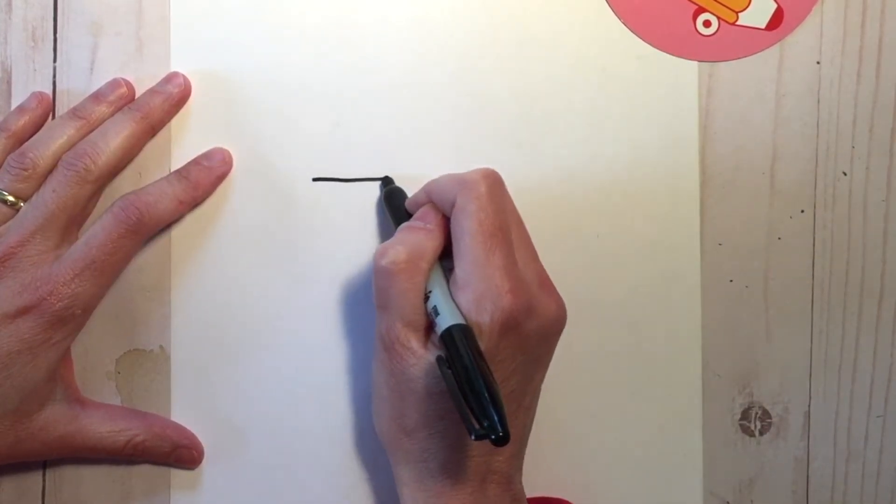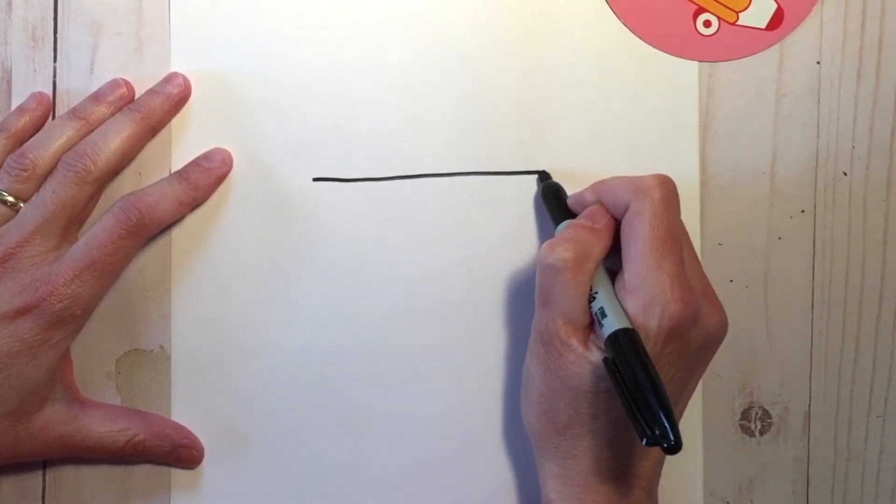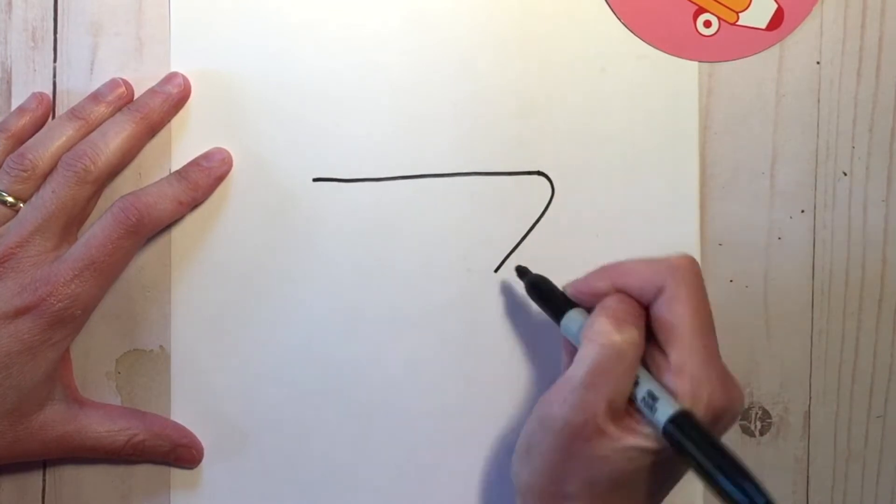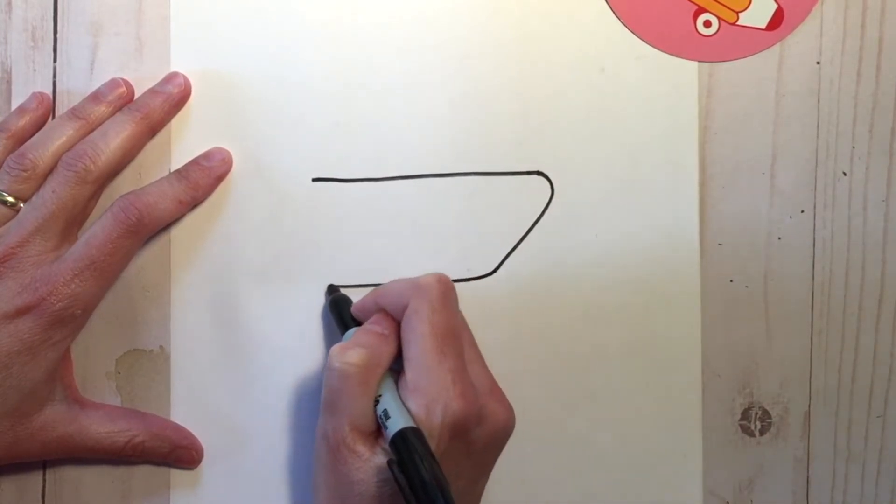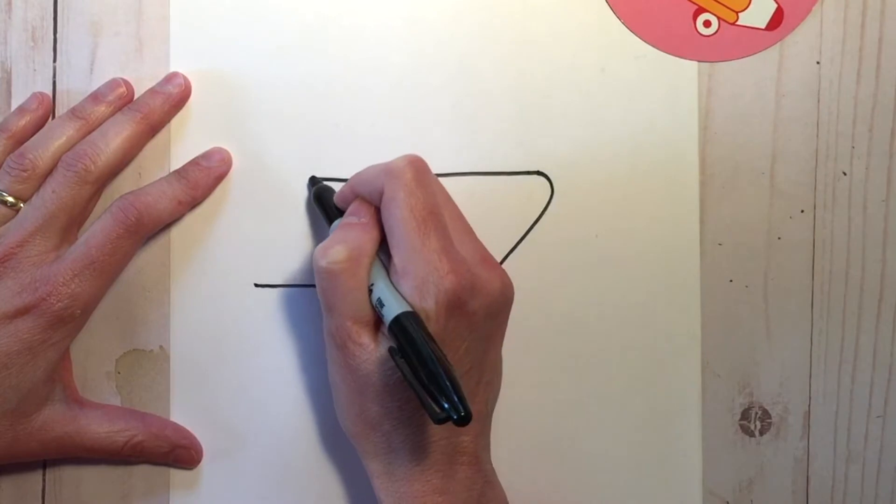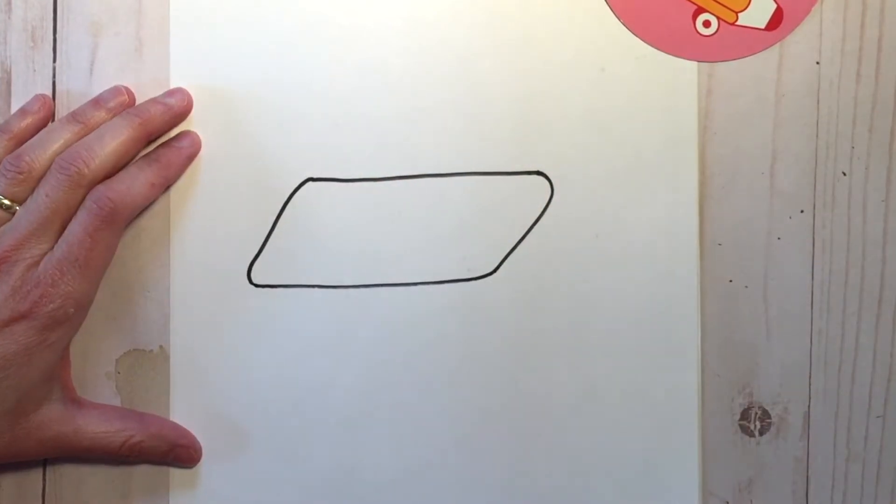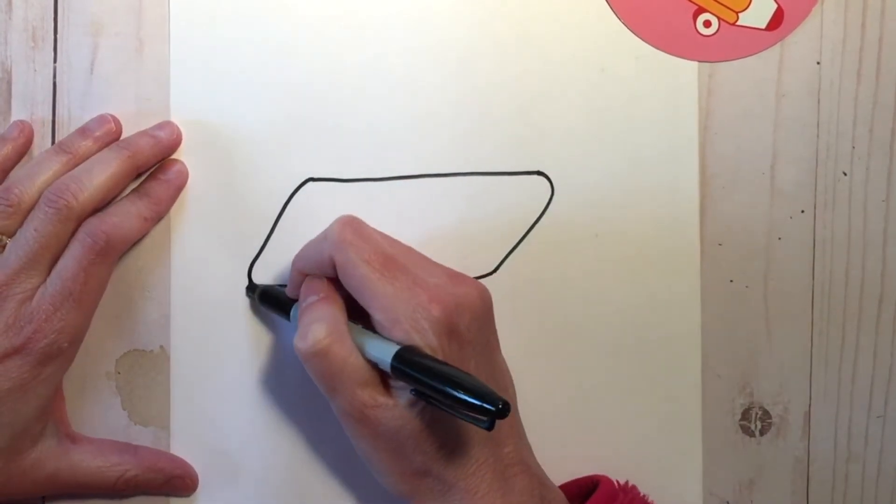Start with a horizontal line in the middle and then we're going to curve down to the side, curve across again a little bit longer and then connect those to make this rectangle.